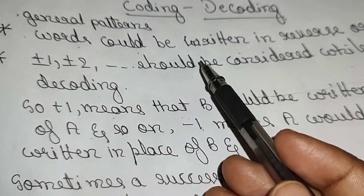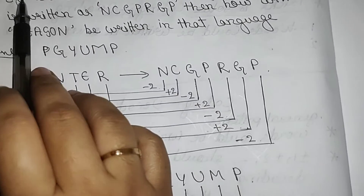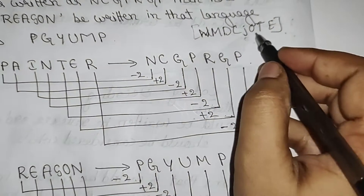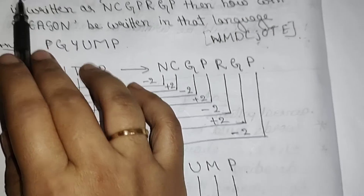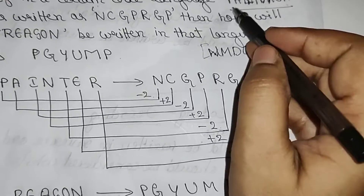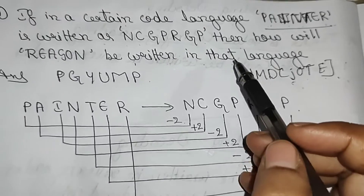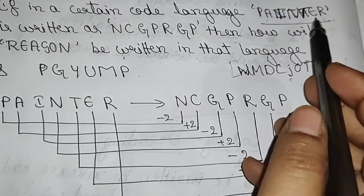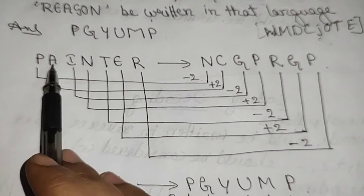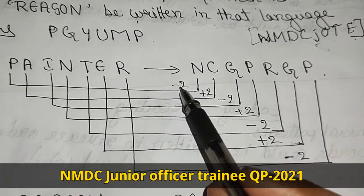This question was asked in NMDC Junior Officer Trainee Electrical 2021. If in a certain code language, PAINTER is written as NCGPRGP, then how will REASON be written in that language?